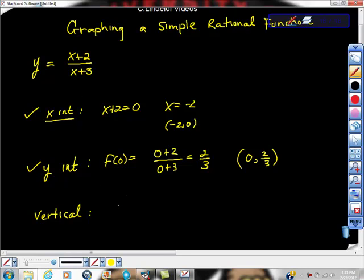So the denominator is x plus 3, so x plus 3 equals 0. x equals what? Equals negative 3. What does this look like? What does a vertical asymptote look like?